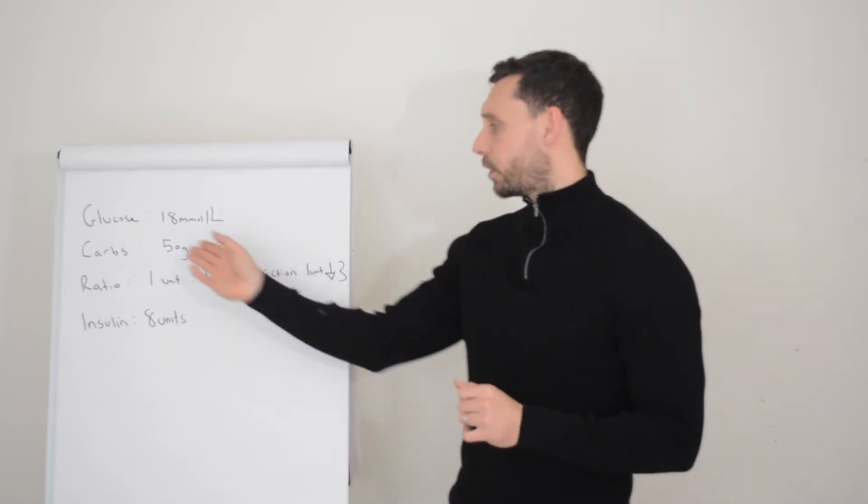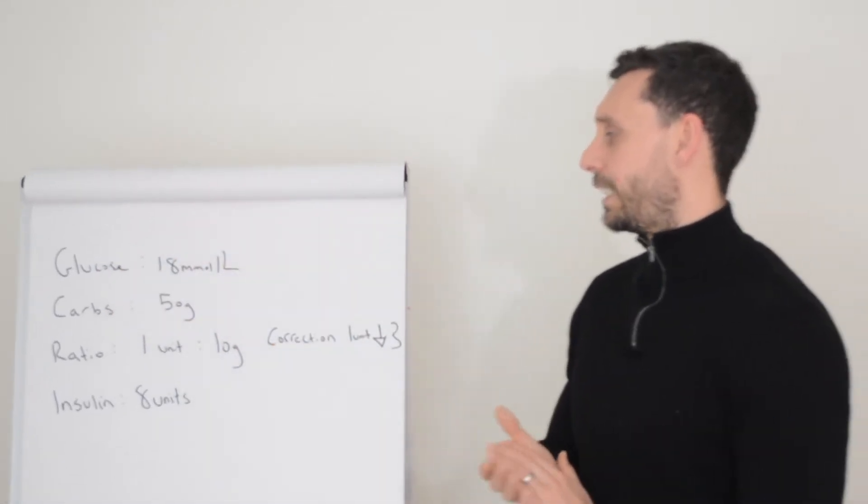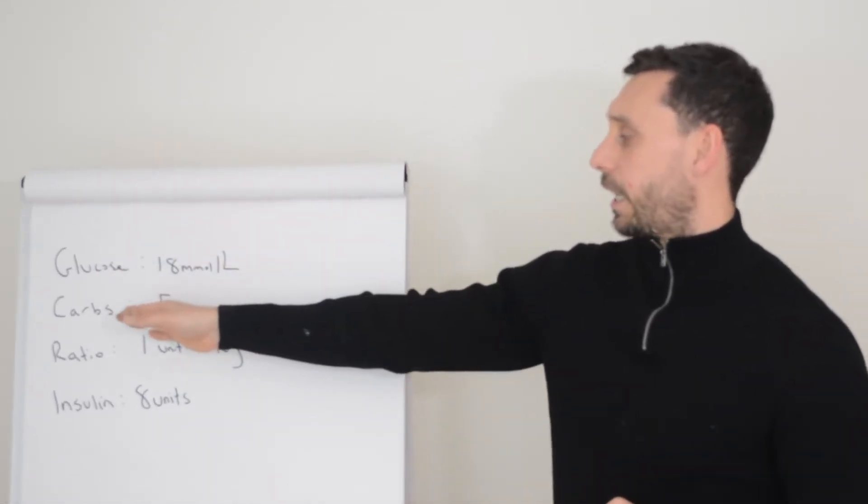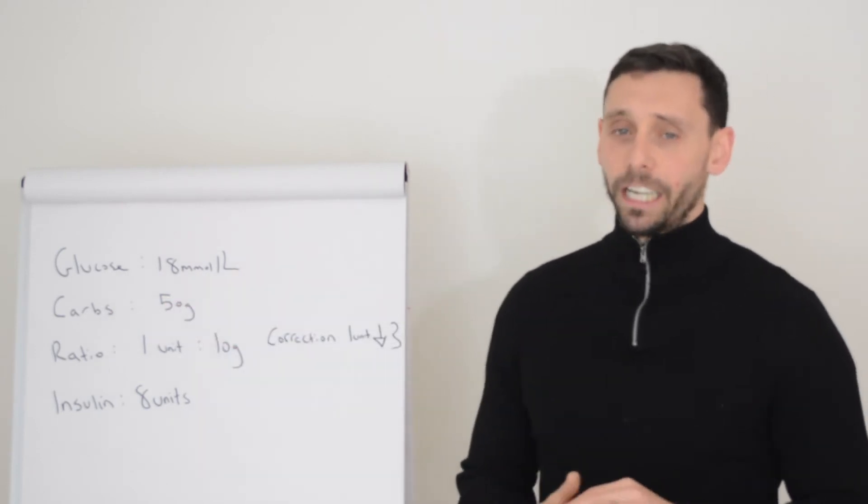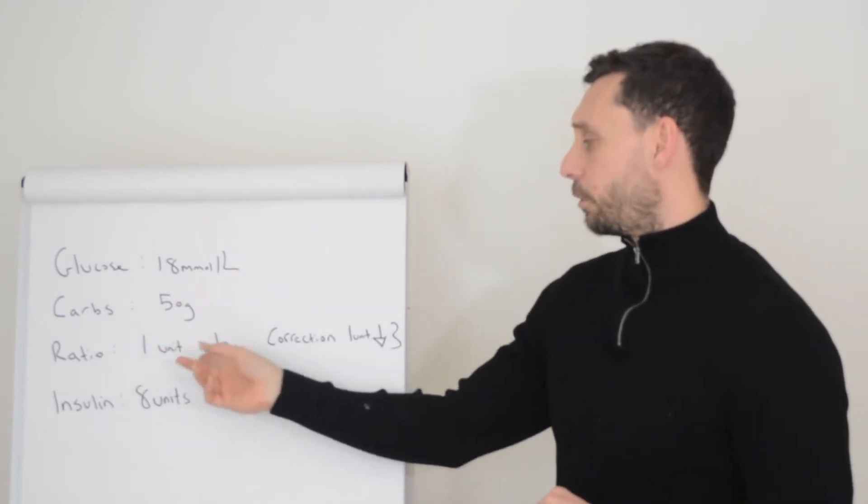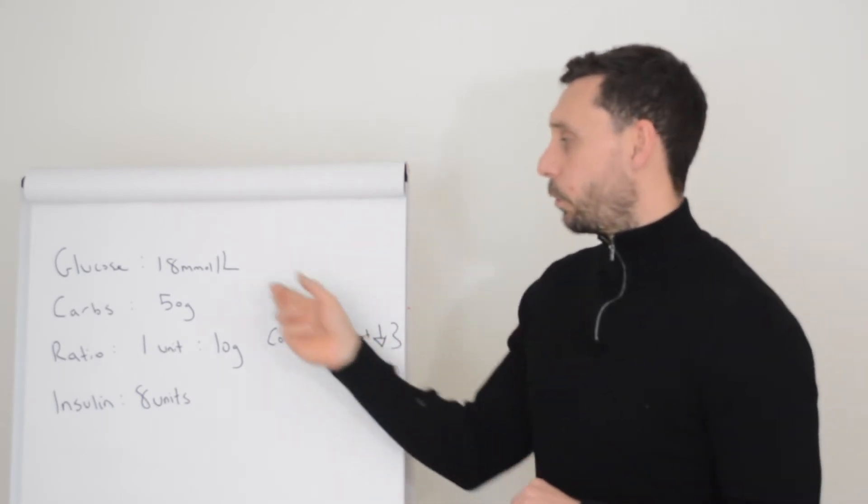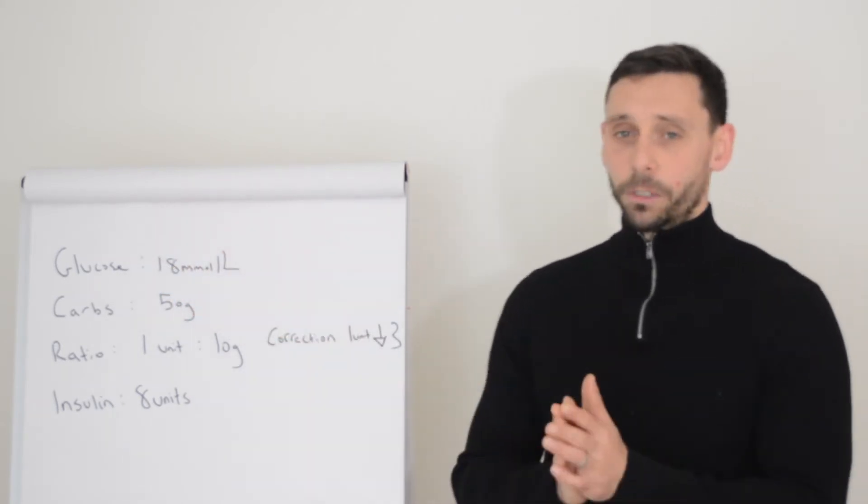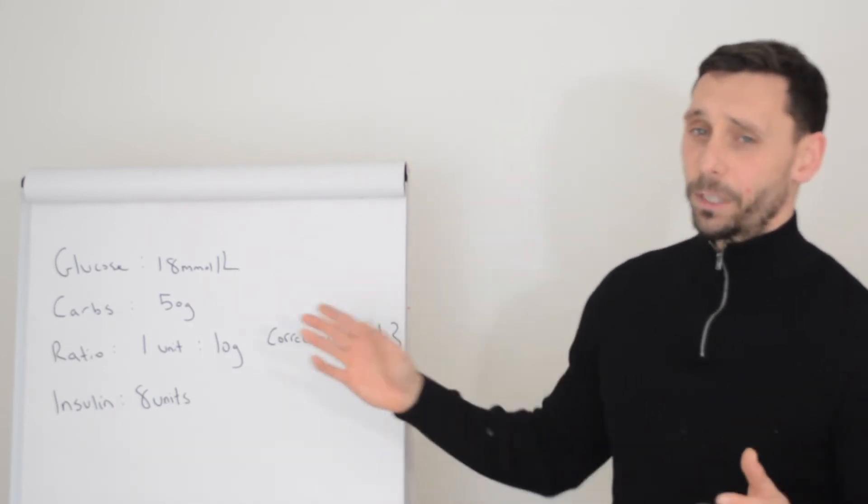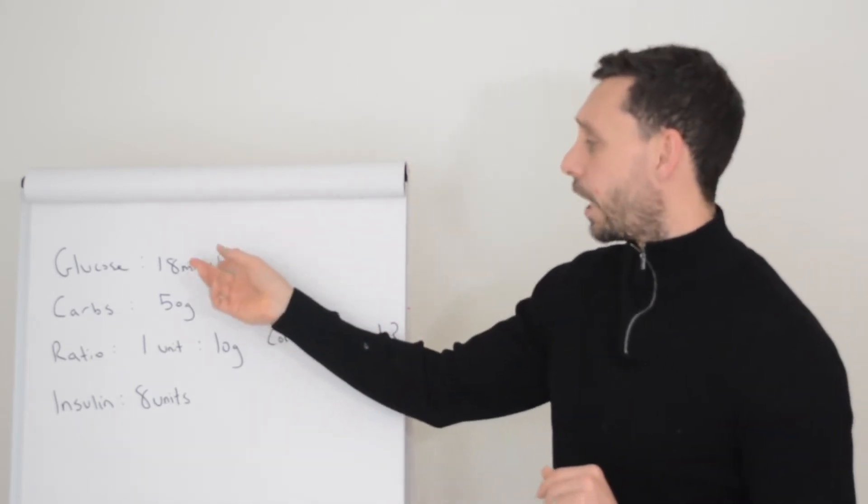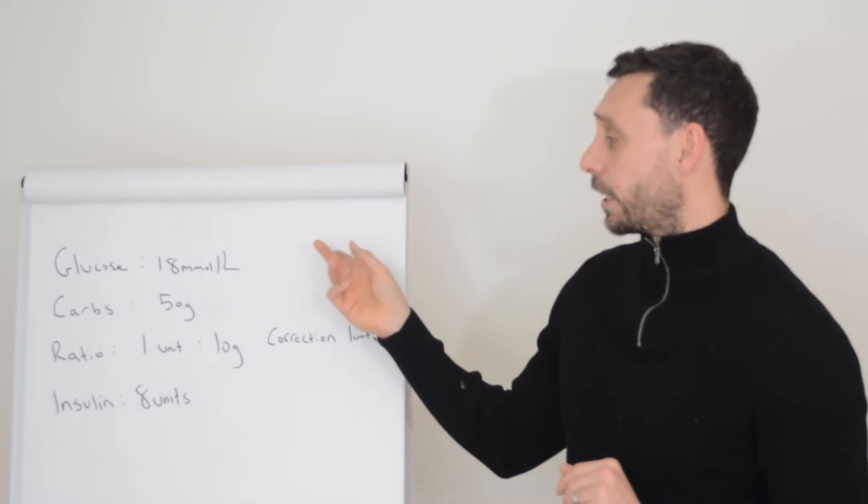Let's give an example here. You've tested your glucose and you're 18 millimoles per liter. You're going to have 50 grams of carbohydrate at your meal. You're on a ratio of one unit for 10 grams and your correction is one unit drops you three. So in order to get your glucose back into target, which is somewhere between five and 10, let's say we're going to take it down by nine. Let's draw this out, shall we?